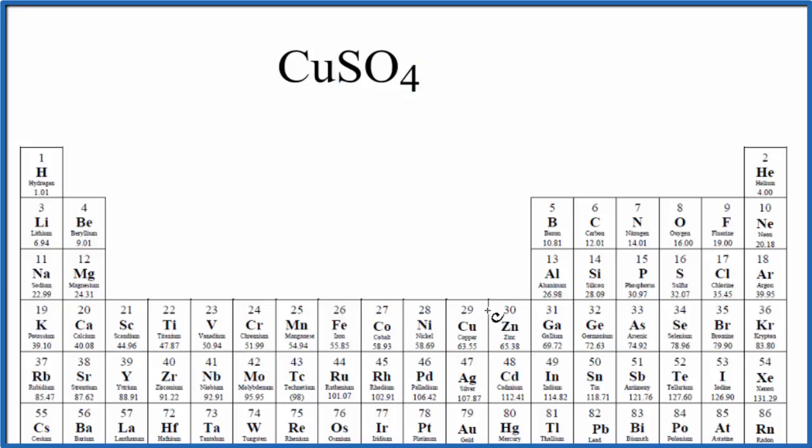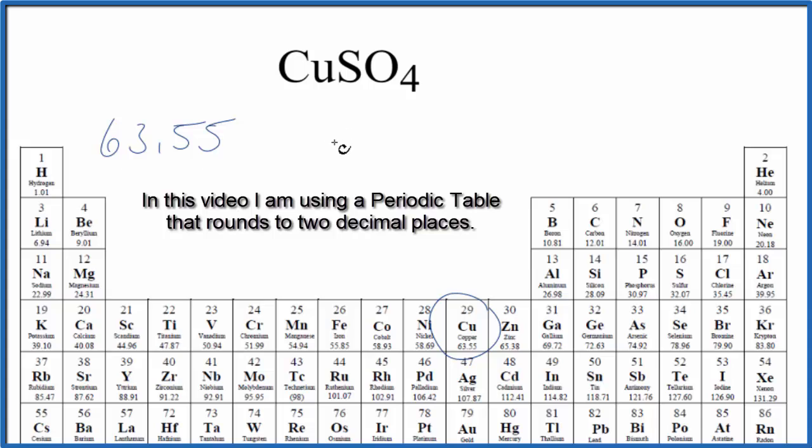So on the periodic table, we find copper. That's 63.55 grams per mole. I won't write grams per mole each time. We'll just put that on at the end.